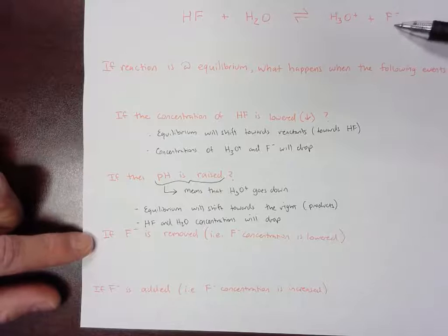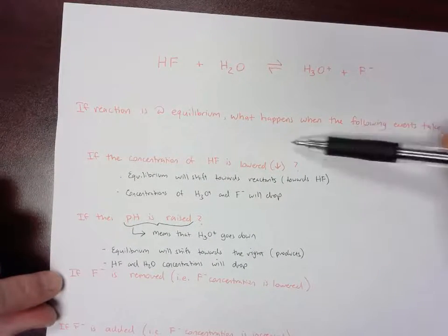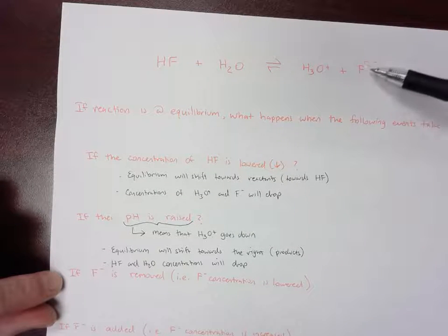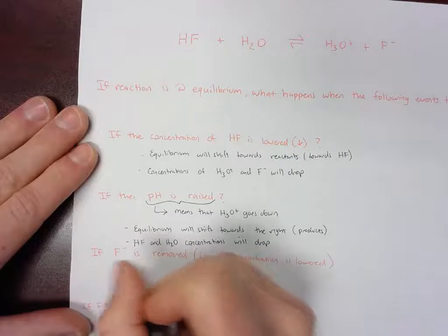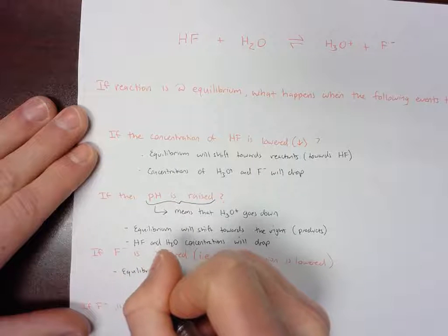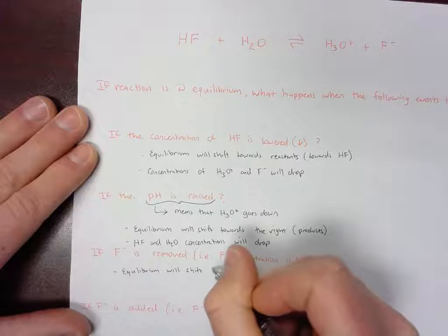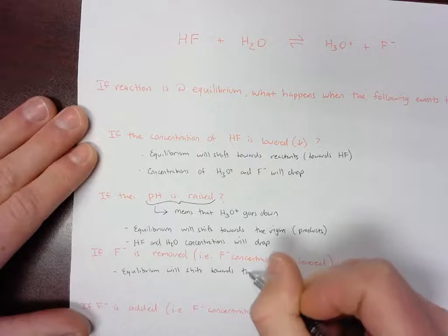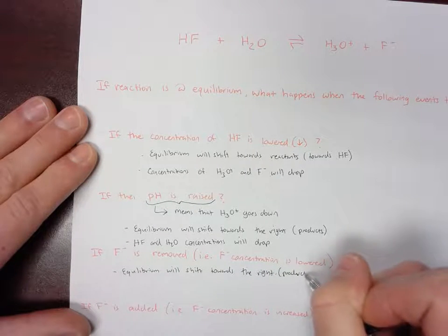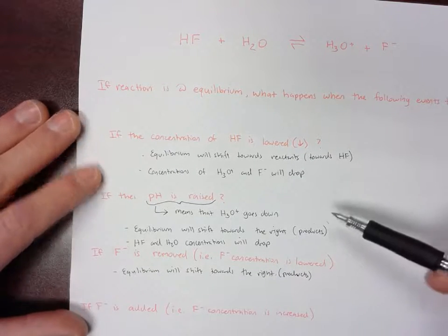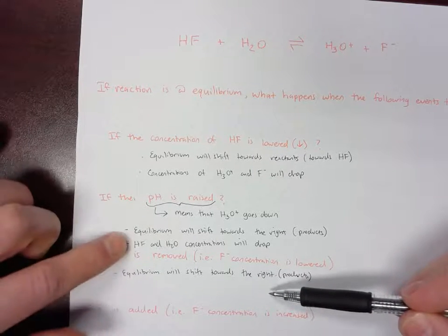If F- is removed — F- is a product — the reaction will do the same thing as in the previous case. It will shift toward the products, to the right. Equilibrium will shift towards the right, or towards the products. And HF and H2O concentrations will drop in the same manner.